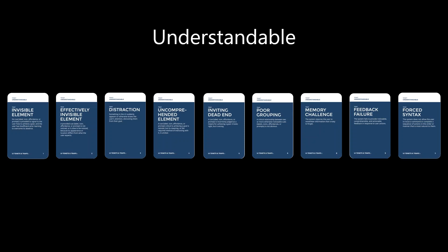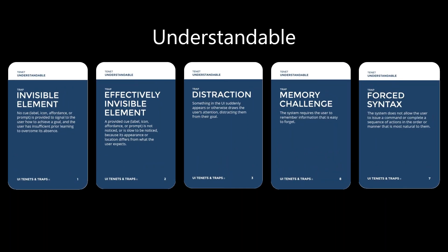The first tenet is 'understandable.' When a UI is understandable, the user is aware of the actions they can take because the UI contains concepts that are learned quickly — like if I press download, I expect the file to download. Understandable is also the tenet with the most traps, and I'll show you five of them. 'Invisible element' is where there is no perceptible way for the user to get to a given goal, and there is no prior learning that would help the user overcome that lack of perceptible path. 'Effectively invisible' is when an element is visible somewhere in the UI, but the user doesn't interact with it — it is visible, but the user doesn't see it.